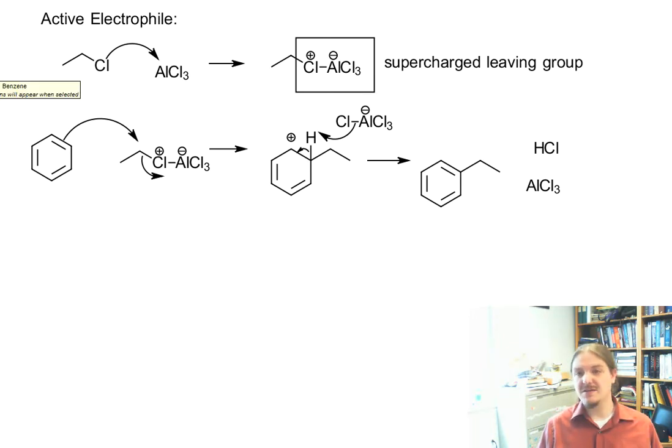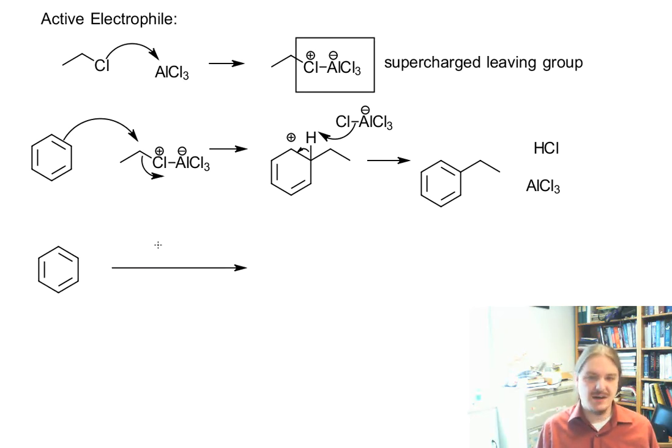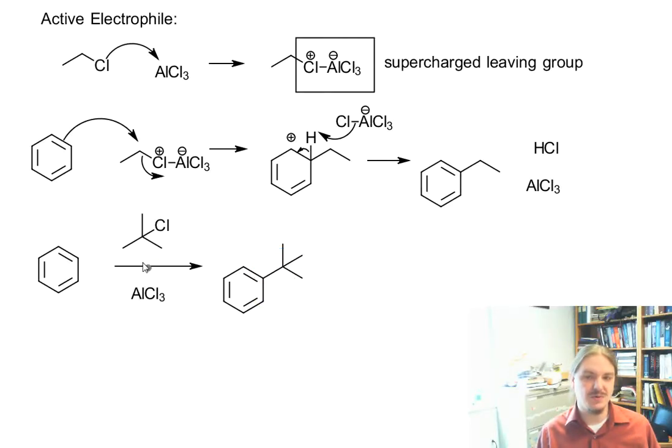Unlike the other electrophilic aromatic substitution reactions I've covered in videos up to this point, this reaction is more general in that there are dozens, if not hundreds, of alkyl halides out there that you could use in this reaction, and just about all of them behave the way you might expect. So for example, if you use tert-butyl chloride, or 2-chloro-2-methylpropane, with aluminum chloride, you would end up with tert-butylbenzene.